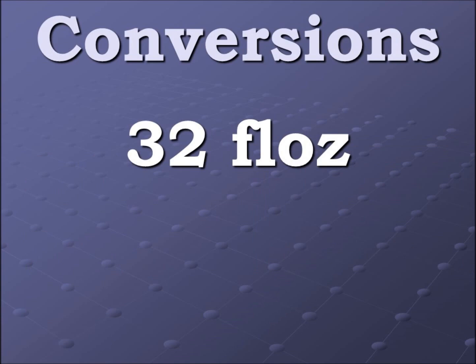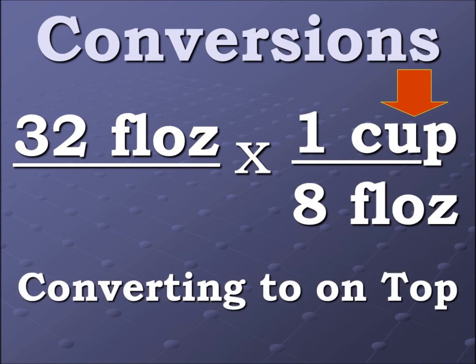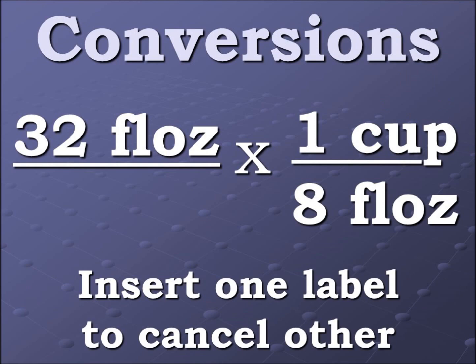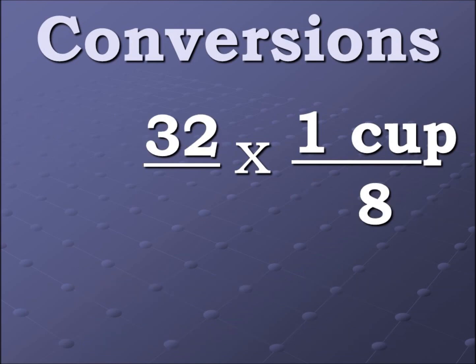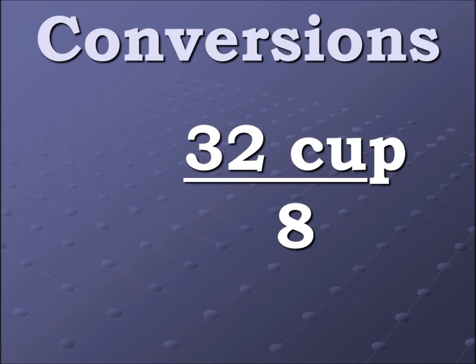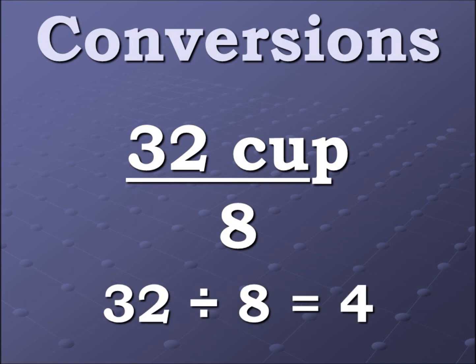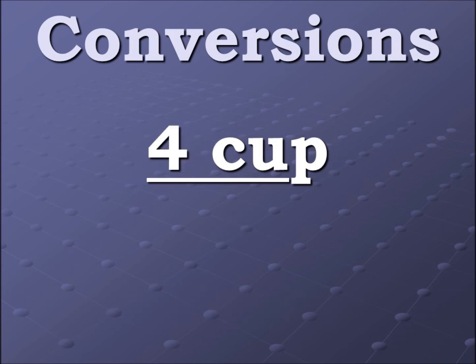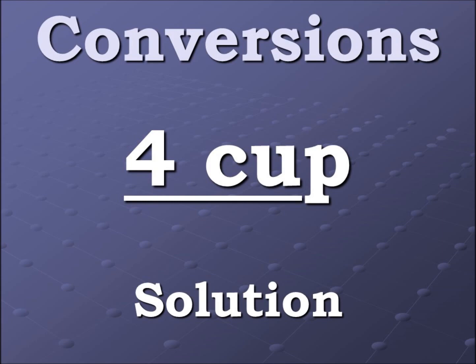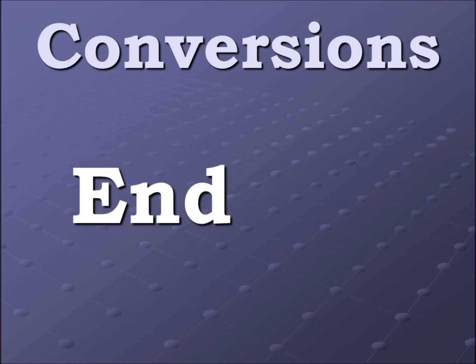We plug that in: 32 fluid ounces times one cup over eight fluid ounces. What we're converting to is on top, and we're inserting one label to cancel out another. Now we multiply: 32 times one equals 32. Now we divide: 32 divided by eight equals four cups. So our final solution — four cups equals 32 fluid ounces. That's the end. Thanks.